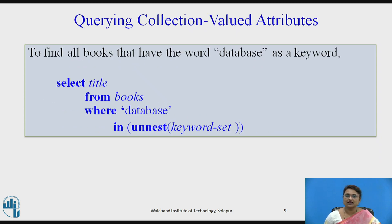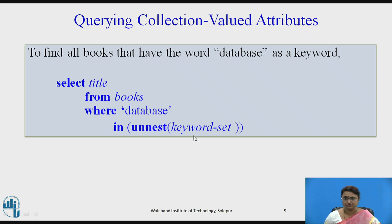Now let us see how to query collection-valued attributes using unnesting and nesting concepts. The example query is: find all books that have the word 'database' as a keyword. The query is: SELECT title FROM books WHERE 'database' IN UNNEST(keyword_set). The UNNEST function automatically unnests the set, comparing 'database' one by one against each element of the keyword set.